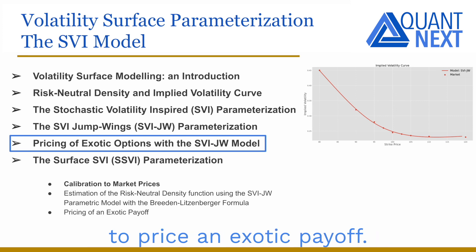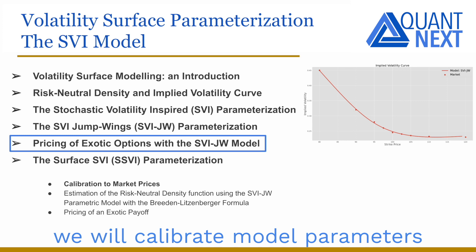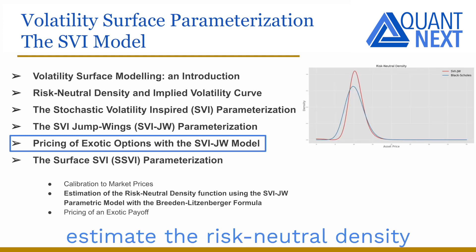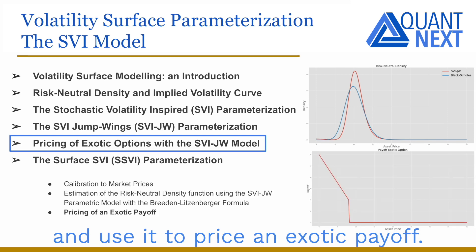We will apply what we have learnt to price an exotic payoff using the SVI-JW method. We will calibrate model parameters to market prices, estimate the risk-neutral density with the Breeden-Nitzenberger formula, and use it to price an exotic payoff.